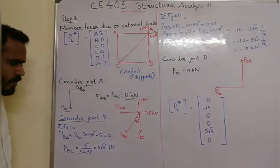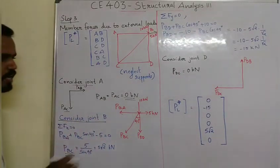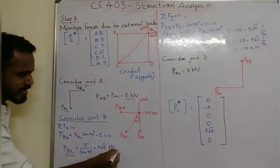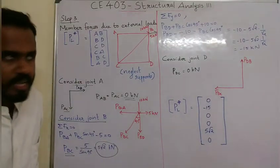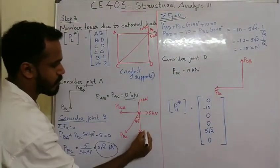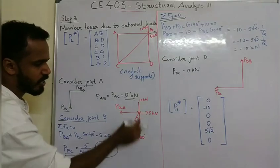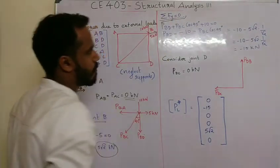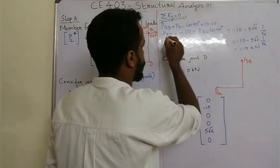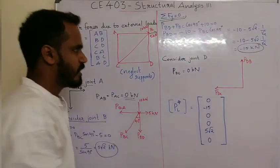Calculate: sigma FX equal to zero. PBA plus PBC into sine 45 degrees minus 5, and from that PBC value — getting all horizontal forces — so PBA plus PBC sine 45 minus 5 is equal to zero. From that, PBC is equal to 5 root 2. And PBC plus PBC into cos 45 degrees plus 10 in the other direction equals zero.